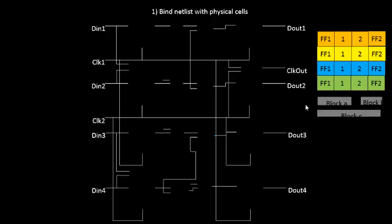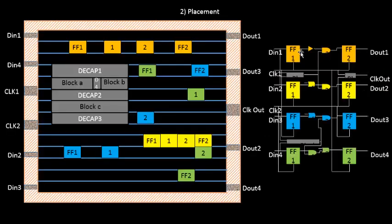So that was the first step: binding the logical netlist to physical cells. We'll go into details later — whether cells are always square or can be rectangular, and whether the area remains the same. For now, the first step in PNR (placement and route) is to bind the logical netlist to a physical one. The second step is placement.